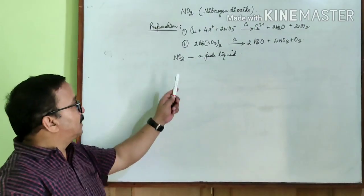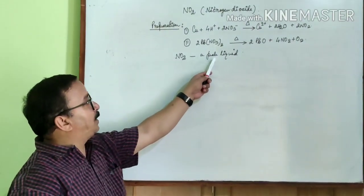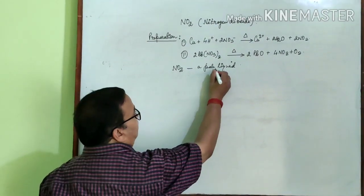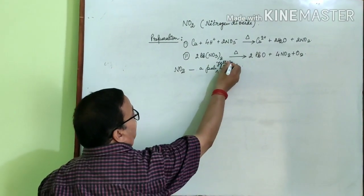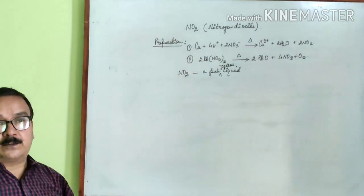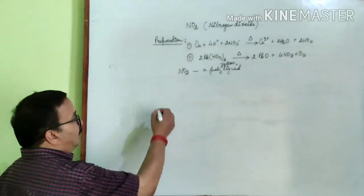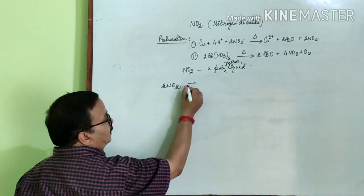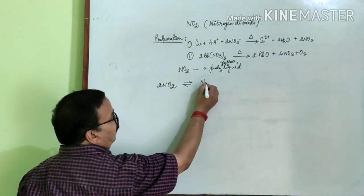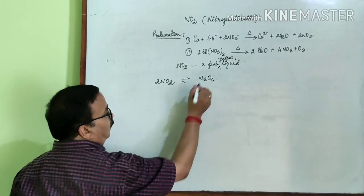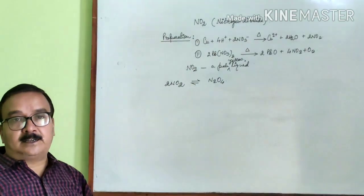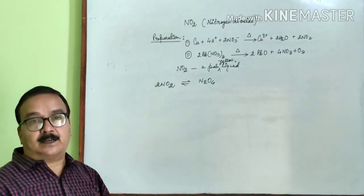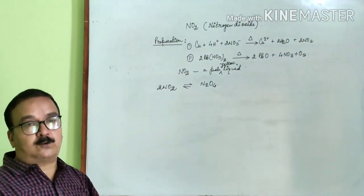Now always remember that NO2 is a pale yellow liquid. But when it undergoes dimerization, two molecules of NO2 undergo dimerization and form N2O4, that is dinitrogen tetraoxide.